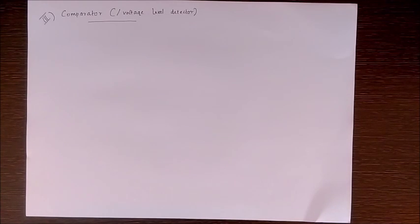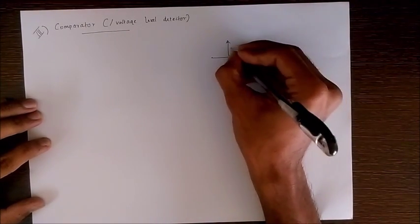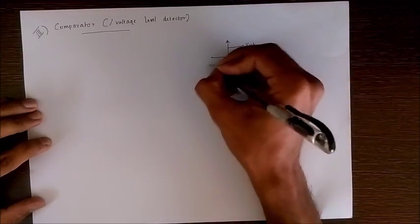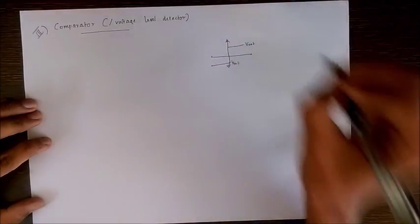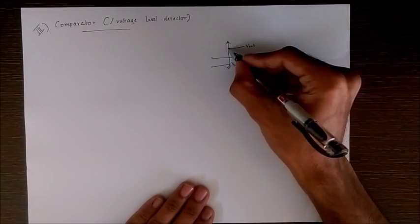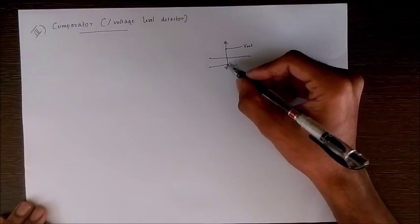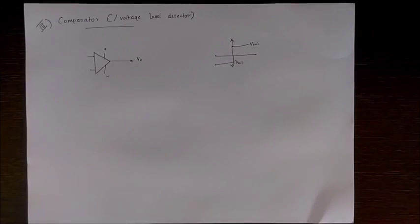Next is the comparator, also known as the voltage level detector. A comparator is defined as a circuit which compares the signal voltage applied to one input of an op-amp with a known reference voltage at the other input, and produces either a high or low output voltage depending on which is higher. The output has two states: +Vsat or -Vsat. If input voltage is greater than reference voltage, output is +Vsat; if less, output is -Vsat.